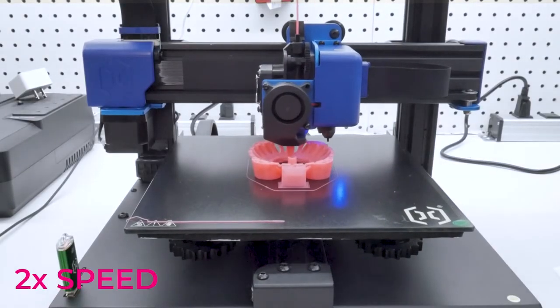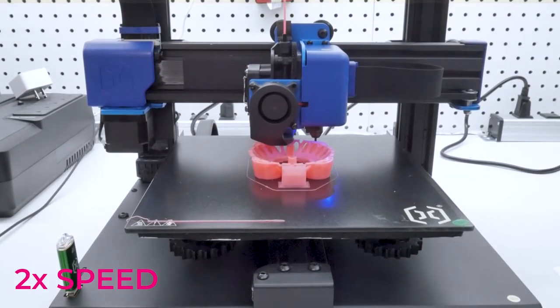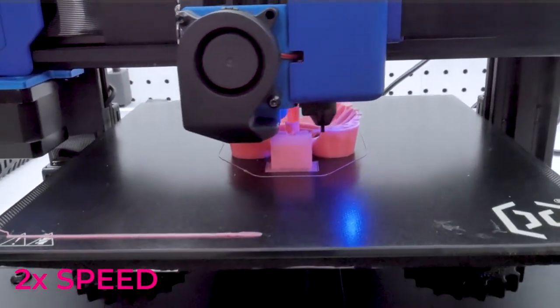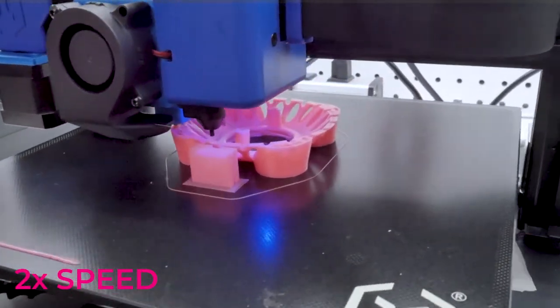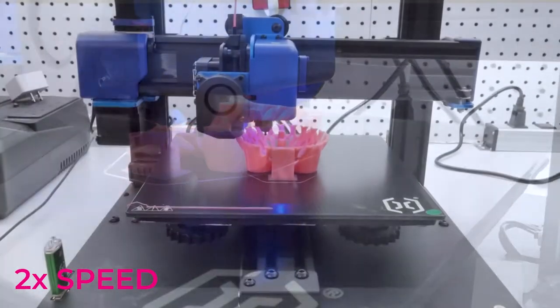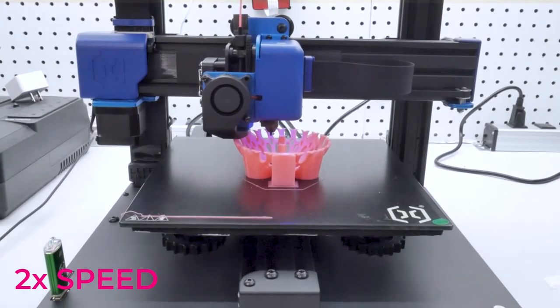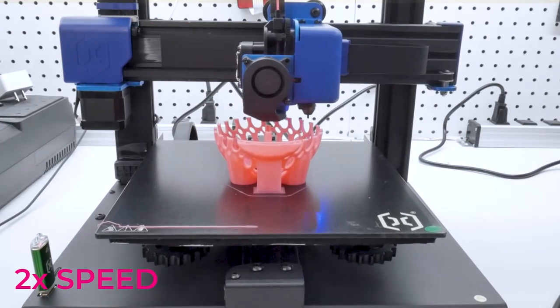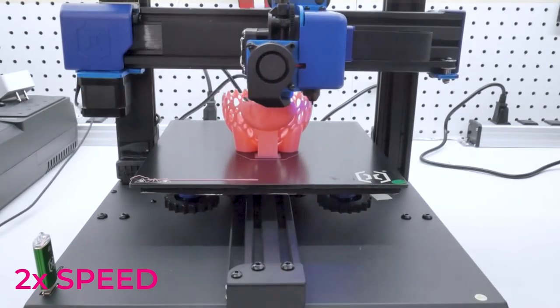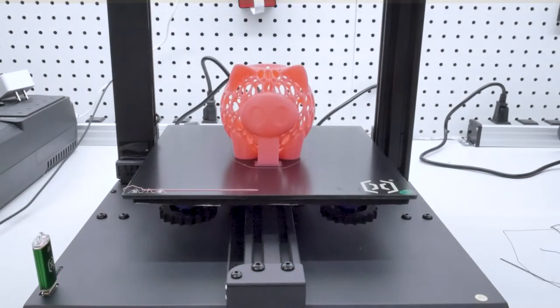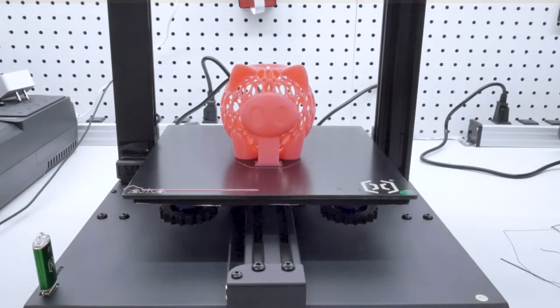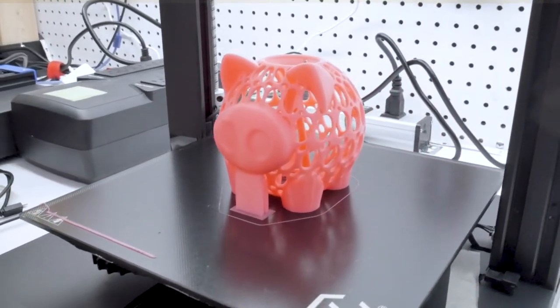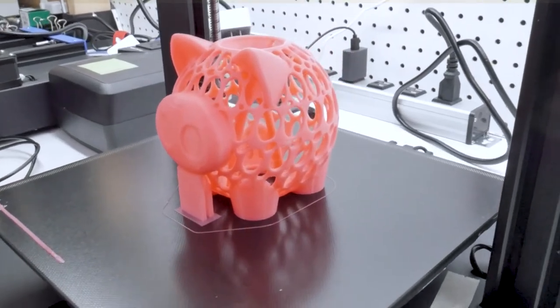The next model I'm going to be printing here is this piggy bank and the purpose of printing this model is to test things like support generation as well as bridges and small overhangs. The genius pro comes with a pretty respectable 4020 radial part cooling fan and it seems to handle the bridges and overhangs quite well. As the part was progressing I could tell that the details were coming out very sharp and that there was no loss of detail in the part.